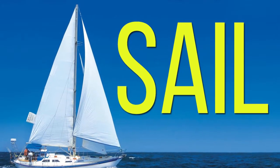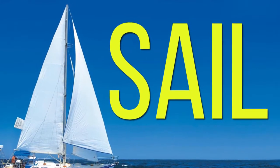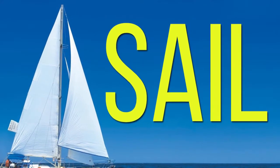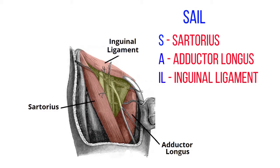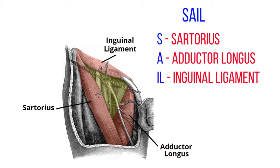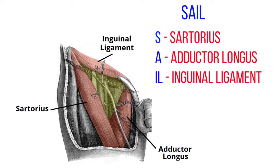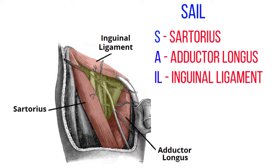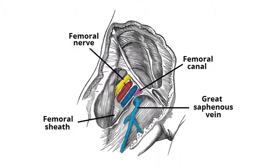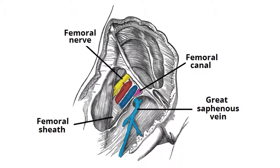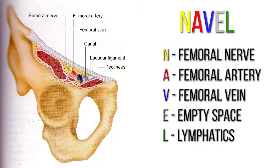A fantastic way of remembering the borders of the femoral triangle is by using the acronym SAIL, since it's shaped like a sail. S stands for sartorius, A for adductor longus, and IL for inguinal ligament.